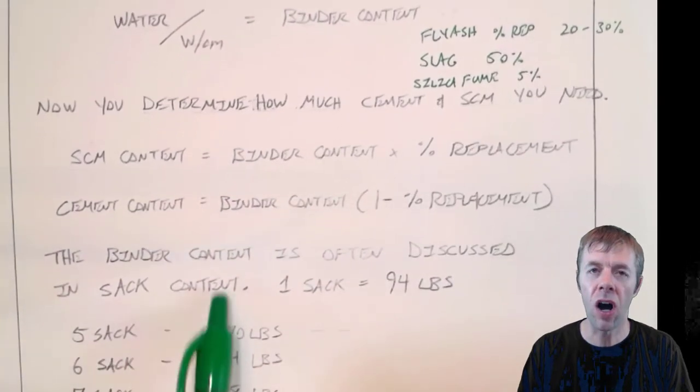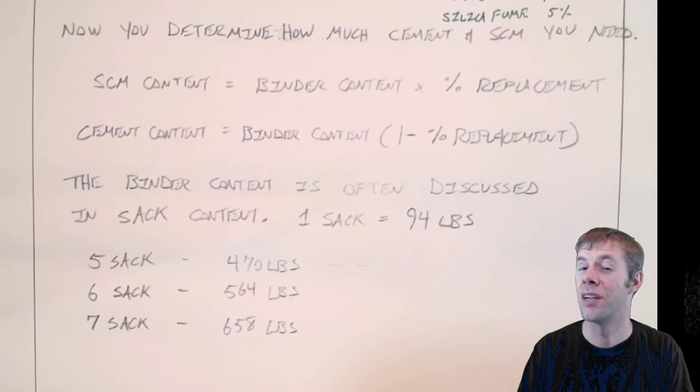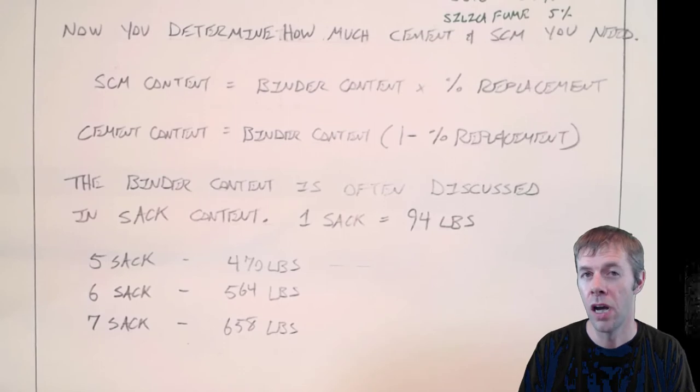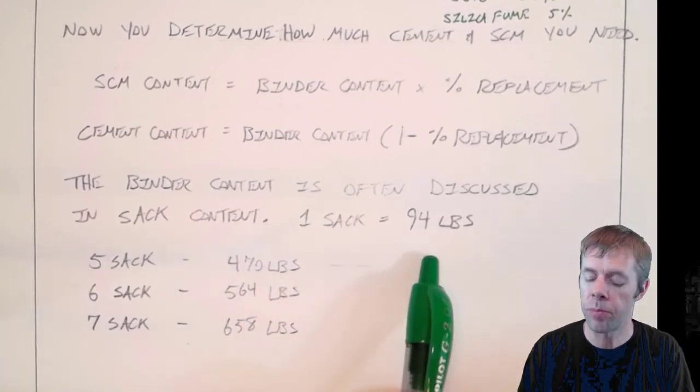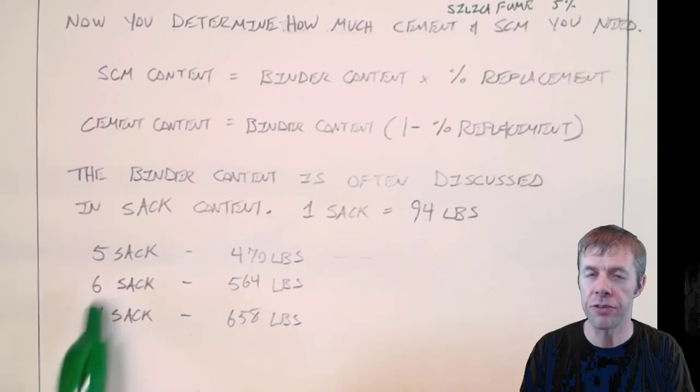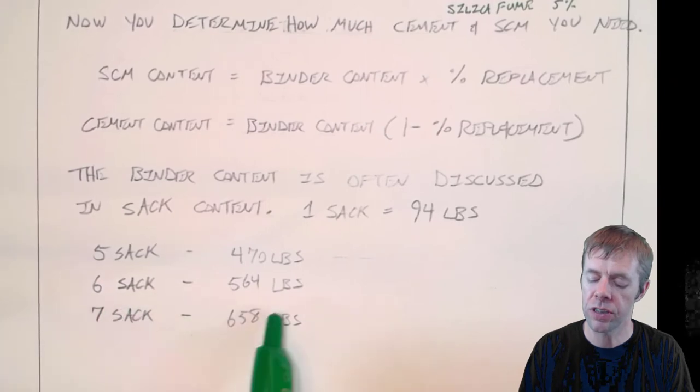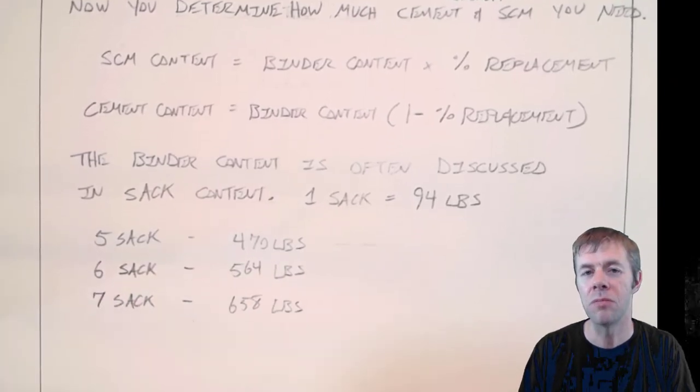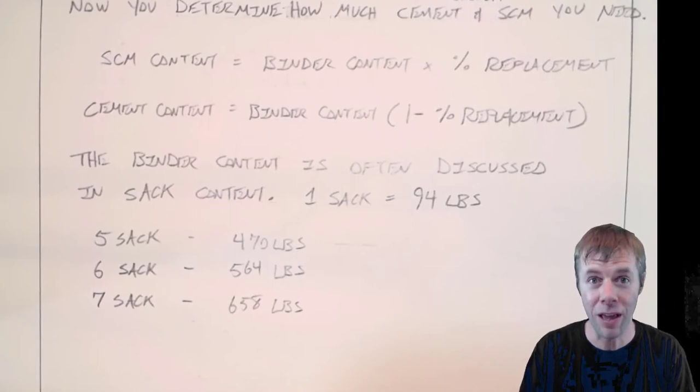This binder content is often discussed amongst concrete fiends in sacks, or sometimes they'll call them bags. But a sack is 94 pounds. So a lot of people talk about a five-sack mix. It's like 470 pounds. Six-sack mix. It's 564. Seven-sack mix. 658. These are numbers that concrete super freaks just know off the top of their head. Yeah, it's pretty awesome.